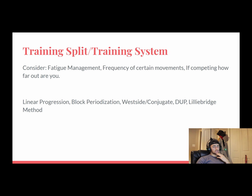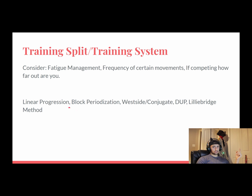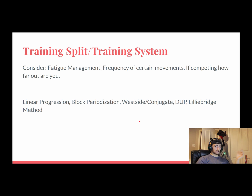DUP — Daily Undulating Periodization — changes daily with a certain goal for each session. For example, on Monday you might hit a four by eight on squats, and then the next squat day you do a three by three or some singles followed by back-off sets of four. That's a DUP style of training — you're undulating what you're doing day to day rather than hitting the same four by eight every single session. It varies; it undulates.